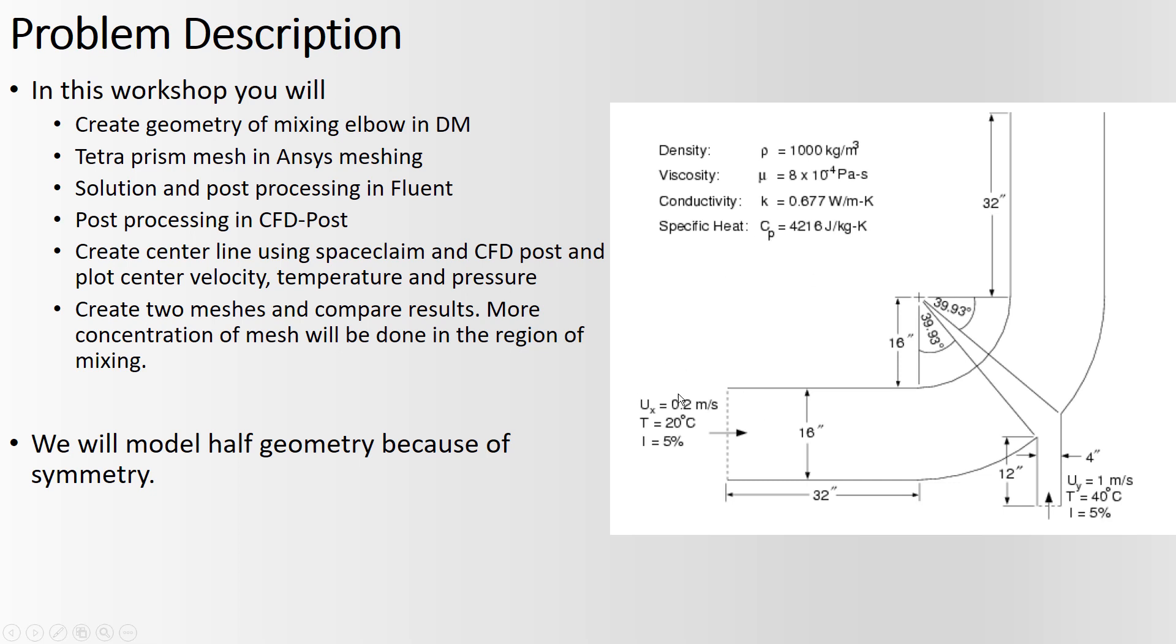Also, the inlet boundary condition in terms of velocity, temperature, and turbulence intensity. The same goes with the boundary condition from the small inlet where the velocity is 1 meter per second. Temperature is double than the large inlet, 40 degrees Celsius, and the turbulence intensity is the same as the inlet for the large pipe.